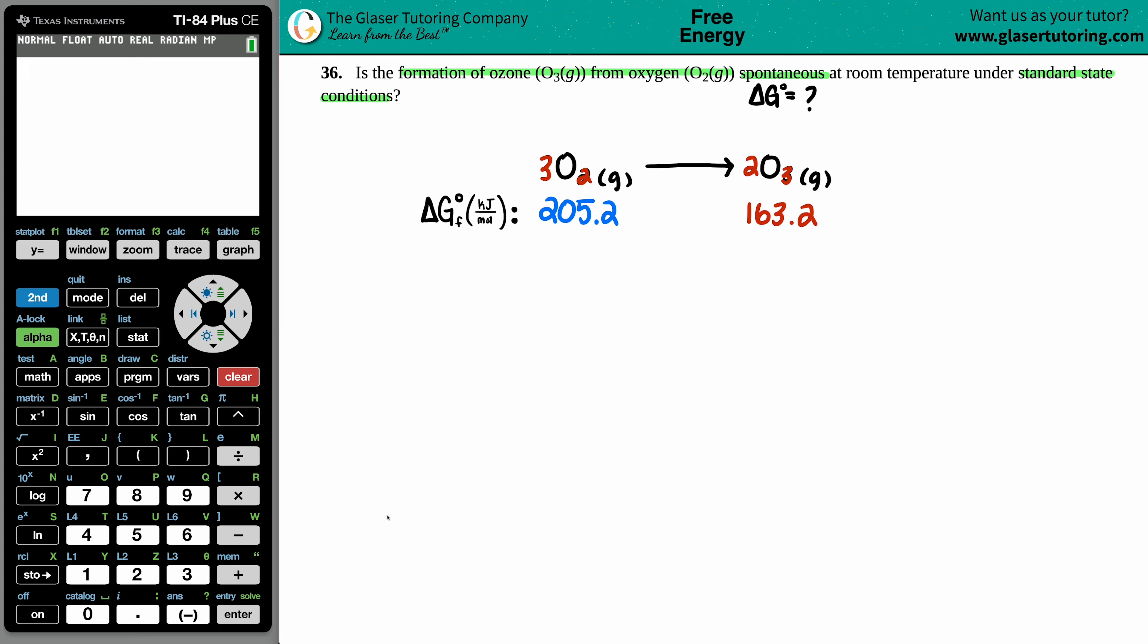Now, keep in mind, if we're only using delta G values, what formula is it? There's only one formula that we can use in which we're going to use product delta G values and reactant delta G values. It's this equation right here. Okay. So delta G for the whole entire reaction, Rxn is reaction, equals the sum. That's what this little squiggly thing means. Sum, aka addition.